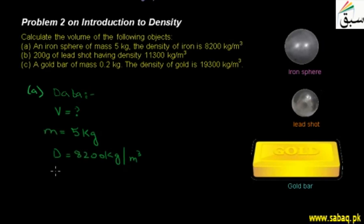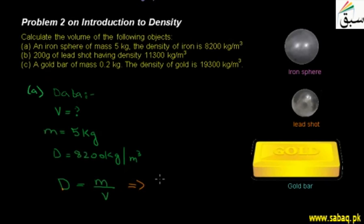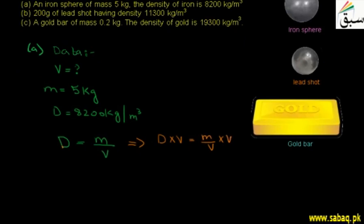Now if we want to find out the volume, we will first look at the density formula. Density equals mass per unit volume. Since we want to find out the volume, we will multiply both sides by volume. Volume cancels on the right side, giving us: volume is equal to mass divided by density.